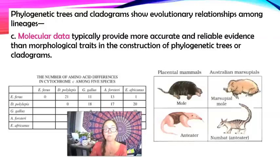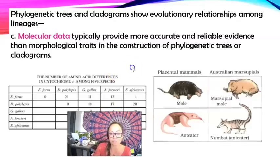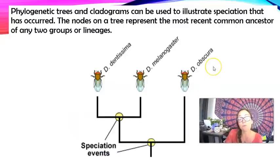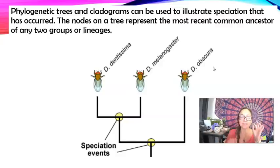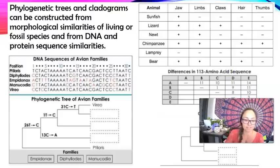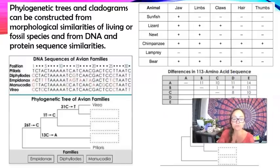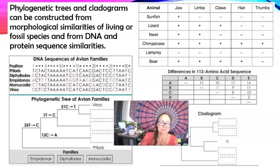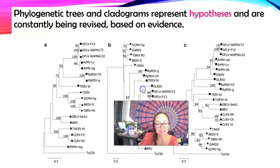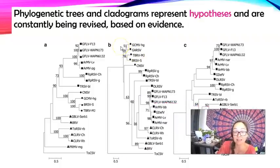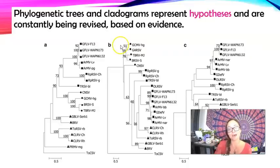Molecular data typically provides more accurate and reliable evidence than morphological data, due to convergent evolution being misleading about common ancestry. Phylogenetic trees also show when speciation has occurred — branching points represent speciation events and the last common ancestor between two organisms. Phylogenetic trees and cladograms are hypotheses of what we think has happened; as new evidence unfolds, that hypothesis can change.